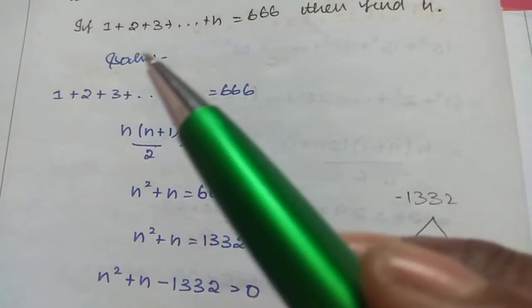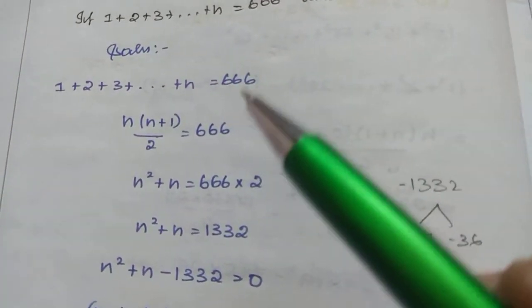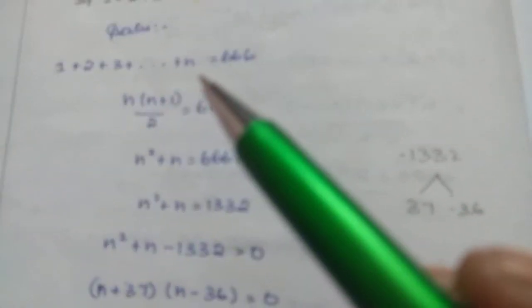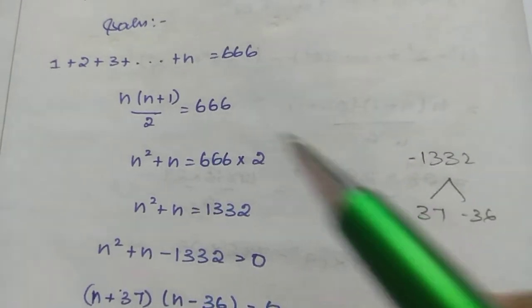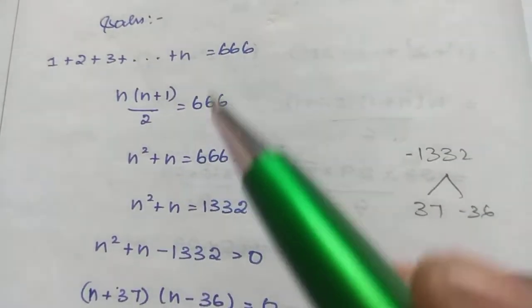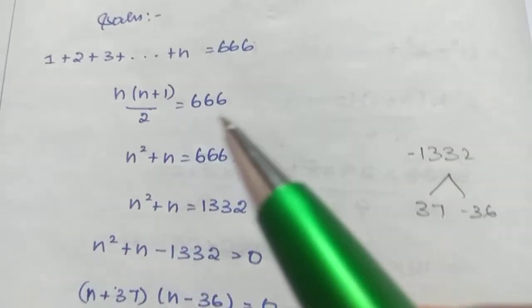Given: 1 + 2 + 3 + ... + n = 666. The sum of natural numbers equals n(n+1)/2 = 666.